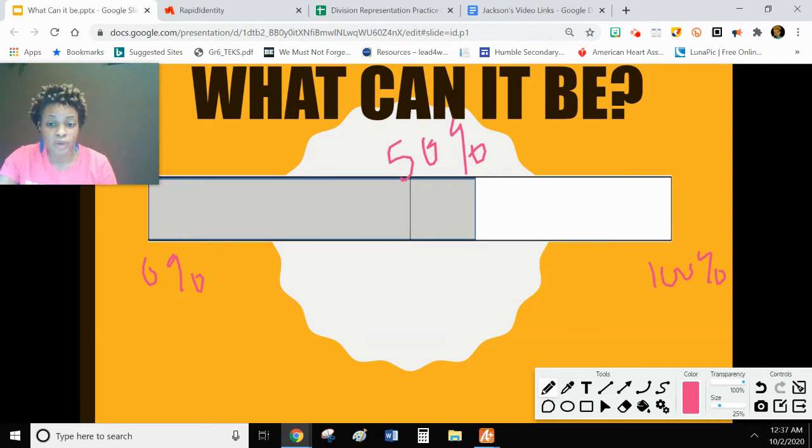So we want to create a range. We know that our answer has to be greater than 50%, but less than 100%. We want to make sure that our answer is reasonable. Could this shaded section represent 90%? No. Could it represent 30%? Definitely not. Could it represent about 70? Maybe.